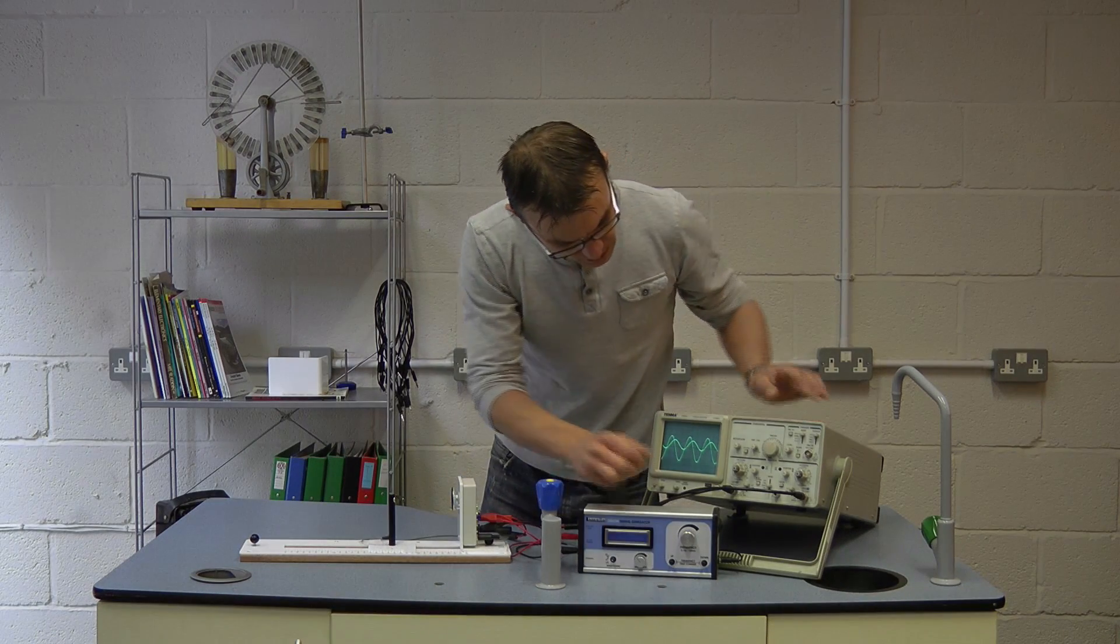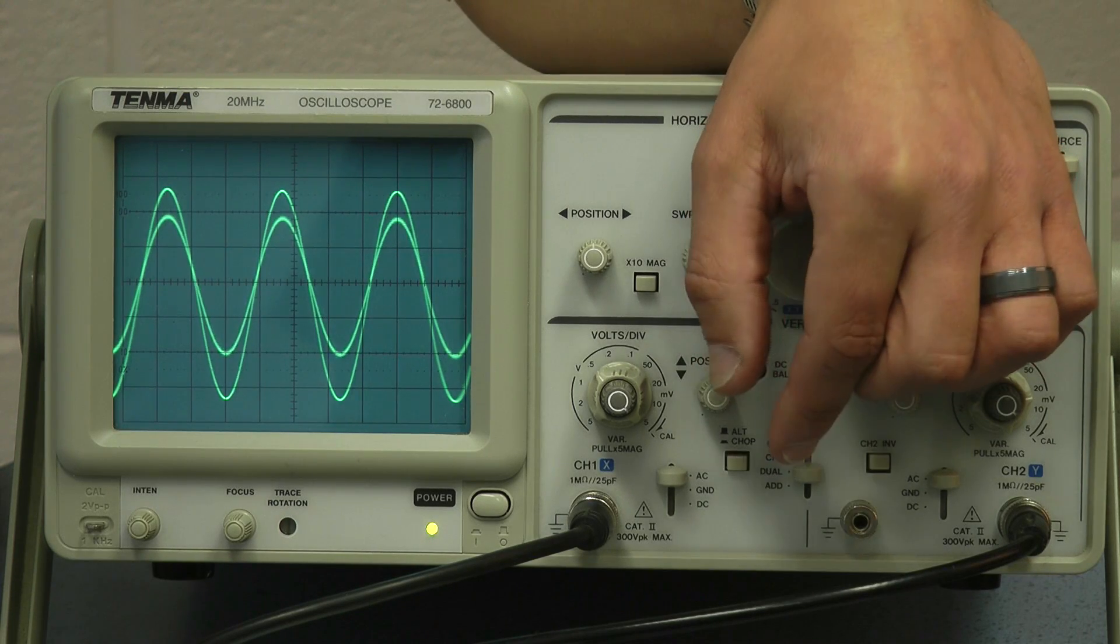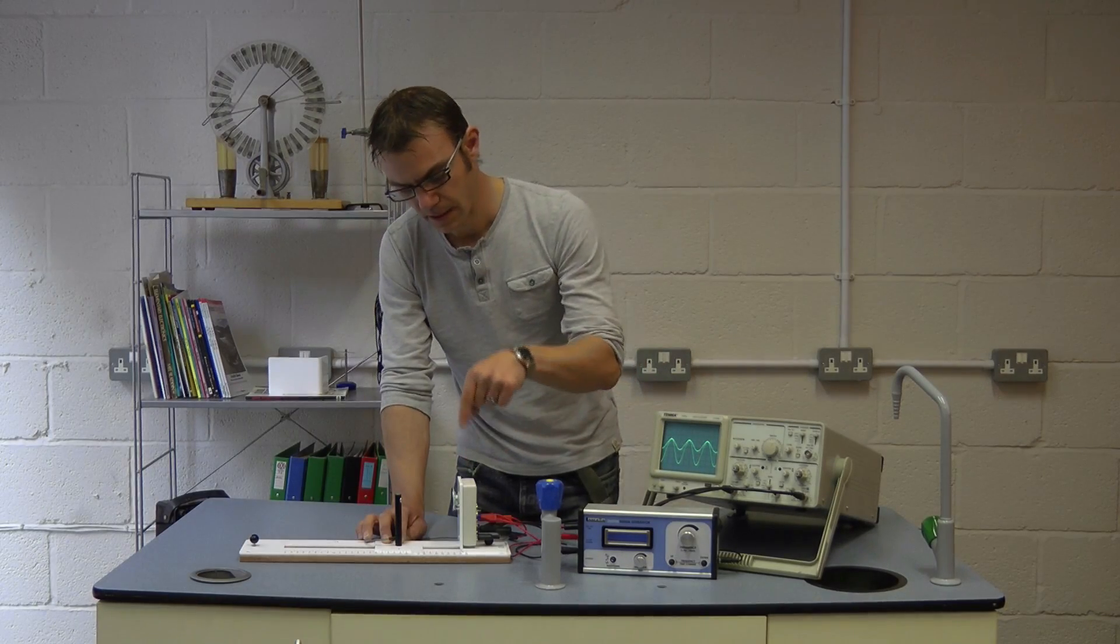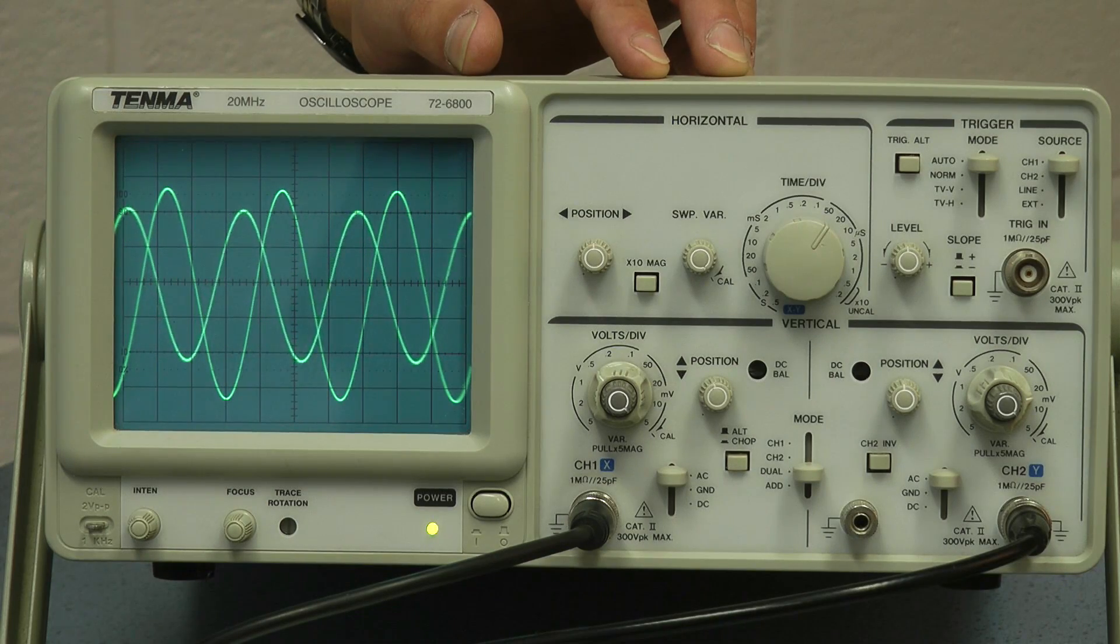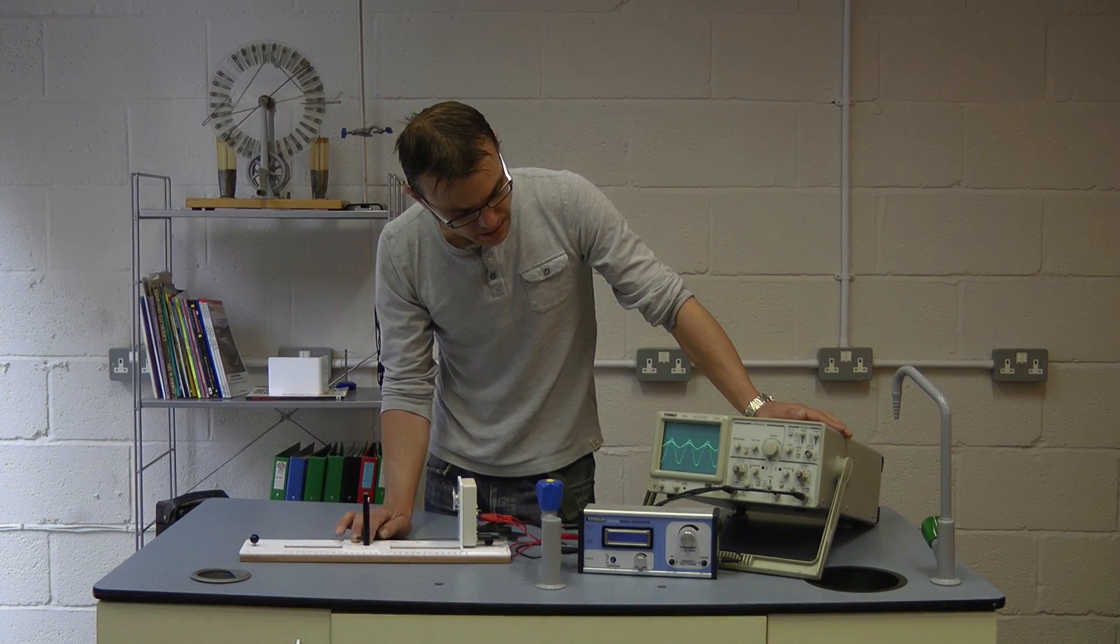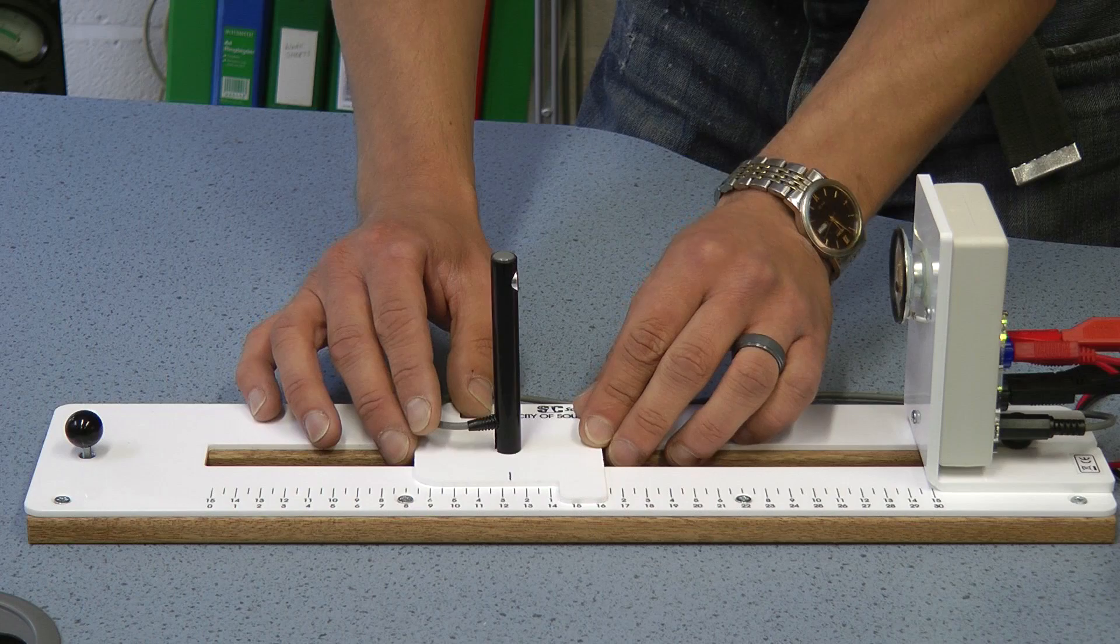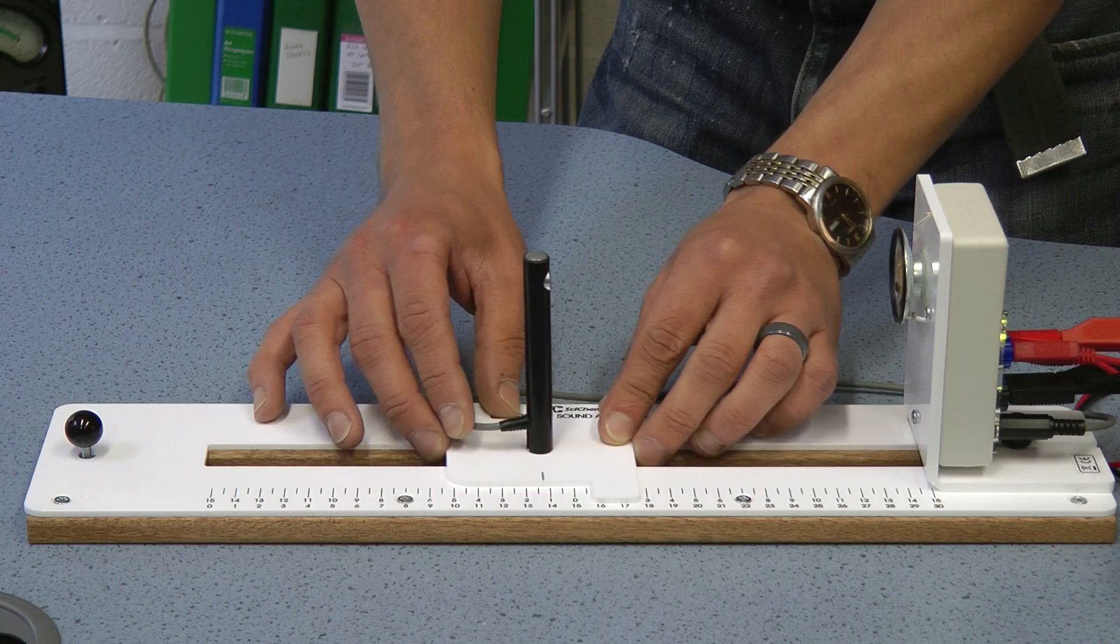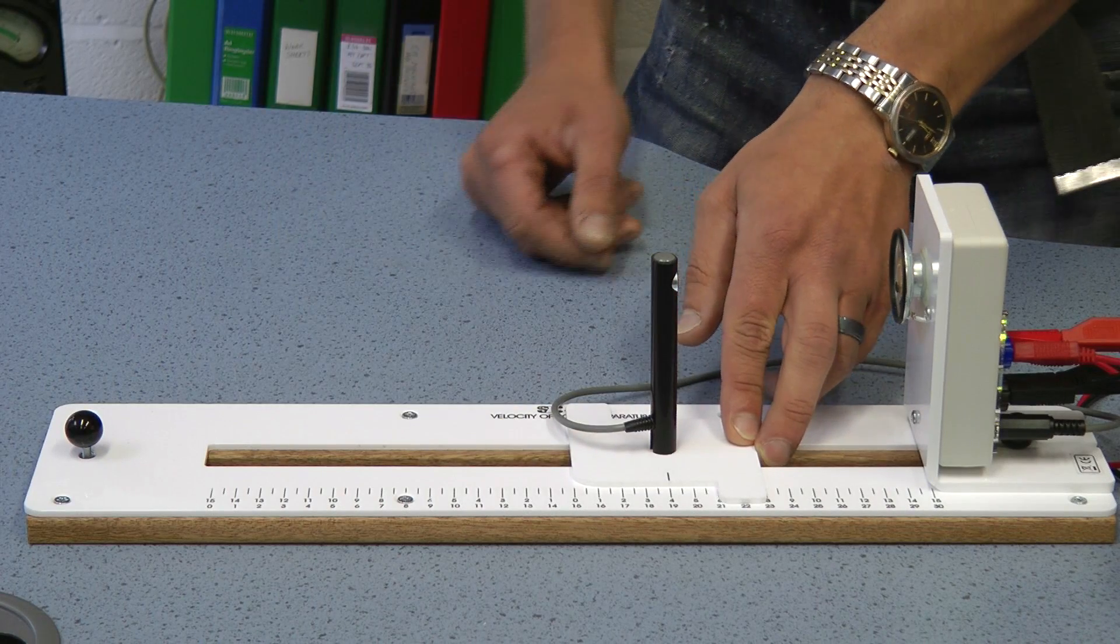There's channel one moving now. If I line these two up our microphone now is picking up a peak at the same time as the transmitter is sending one. If I move it further away you can see the trace for the microphone moves in time. The distance between them lining up the first time and the second time must be one full wavelength and you can read that dimension off the scale here. When they line up here that's at around about 13 centimeters and the next time they line up is around about 19. So that gives us a 6 centimeter wavelength.